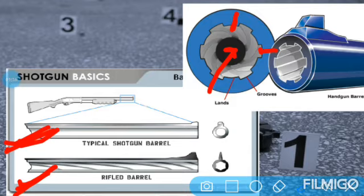Rifled firearms have lands and grooves present. When we talk about caliber, you measure the distance between two opposite lands — that is how caliber is determined.